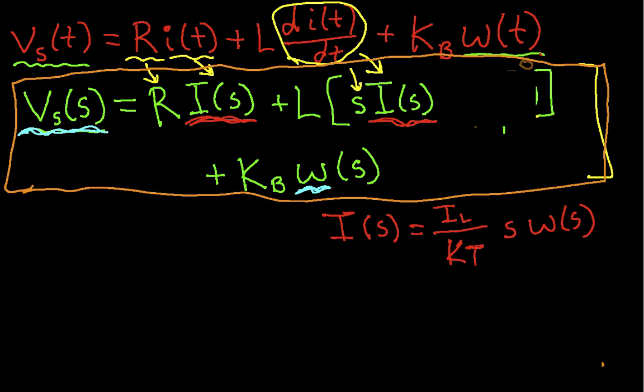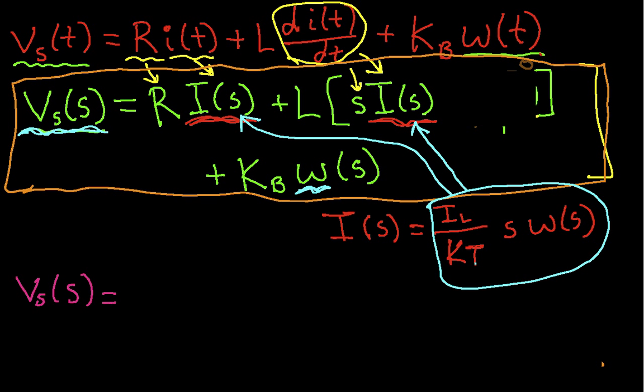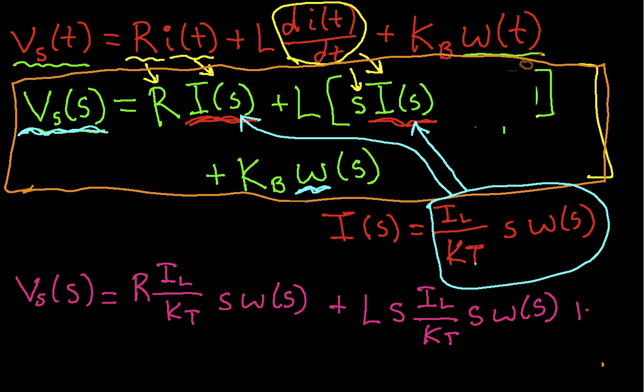So again, we've taken this equation, and we've solved it for i. Having done that, let's just get rid of it, because it's taking valuable screen space. Okay, now I'm going to take this expression for i of s, and plug it in for i of s here, and i of s here. And when I do that, I'll end up with the following expression. I have that v sub s of s is equal to r times i sub l over kt, s omega of s plus ls i sub l over kt times s omega of s plus kb omega of s.